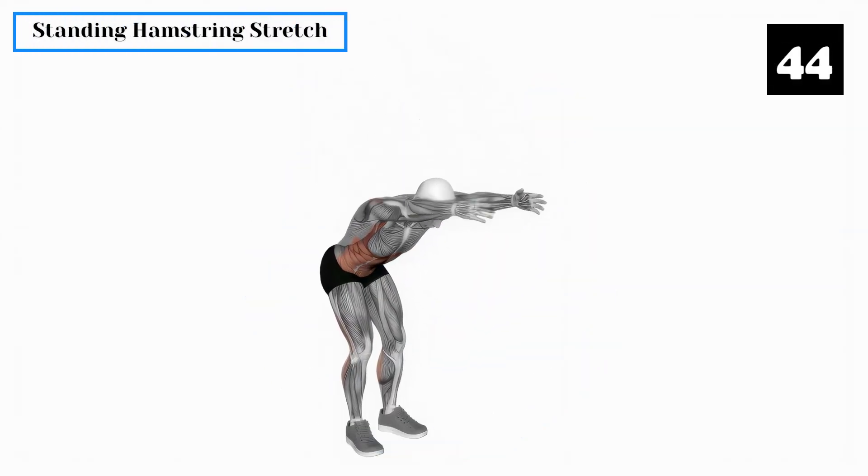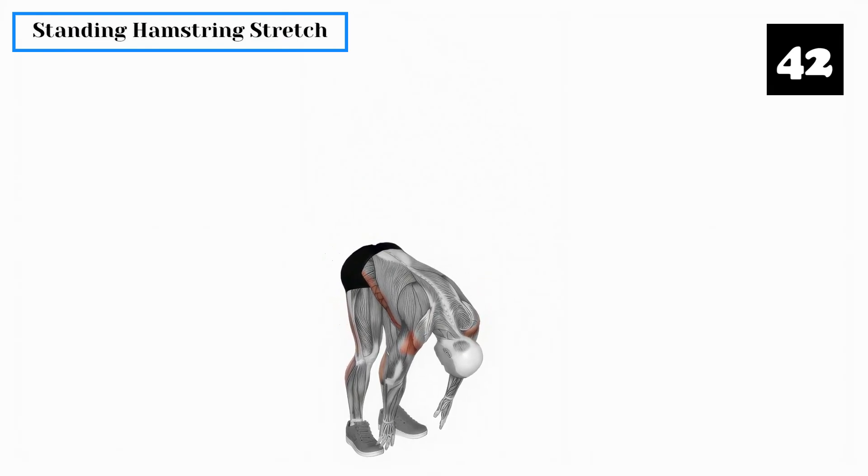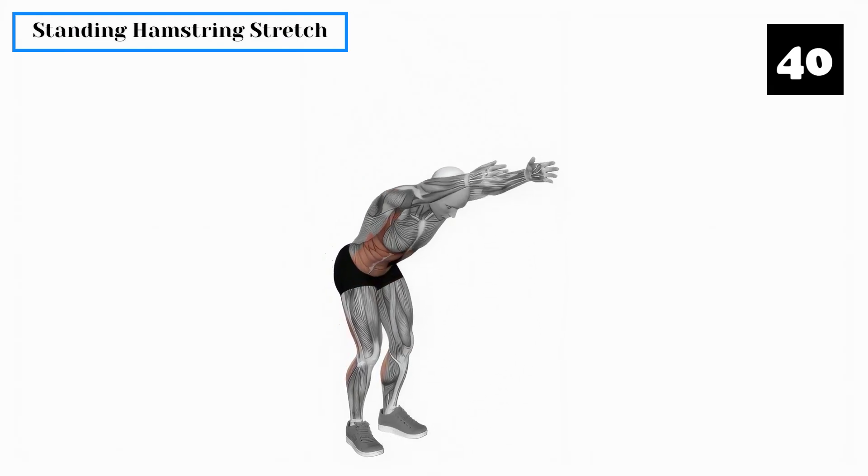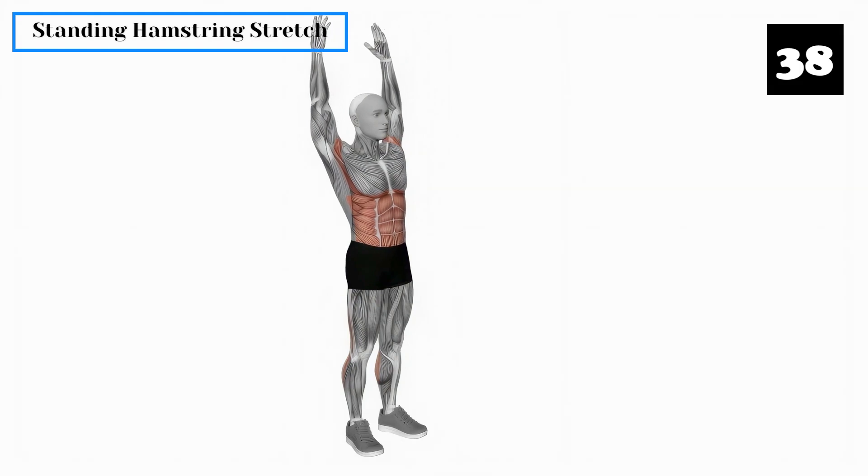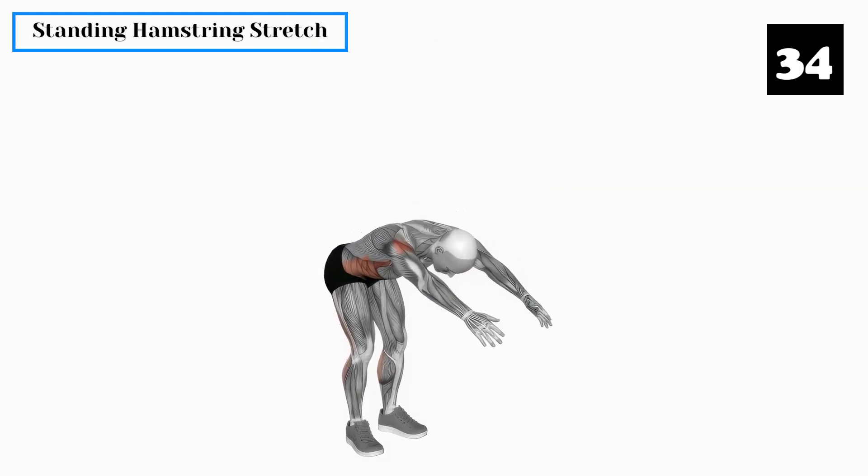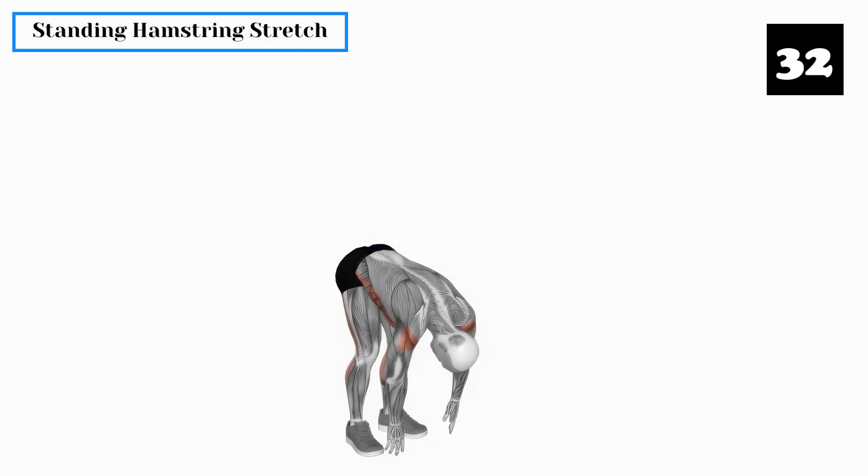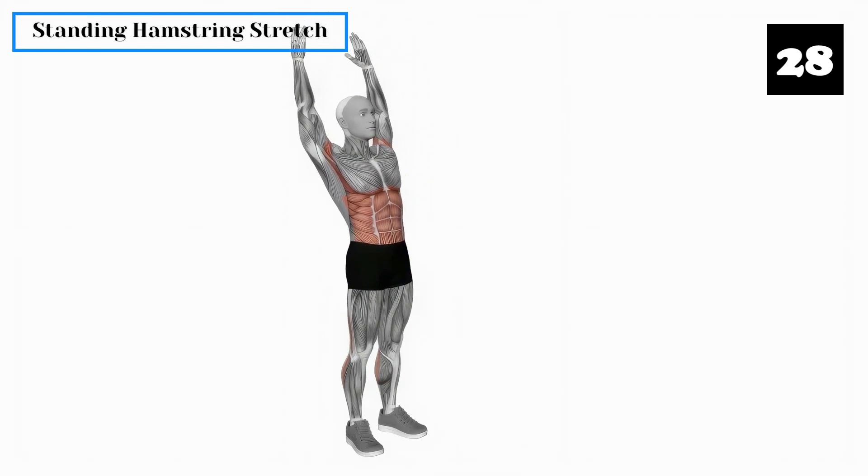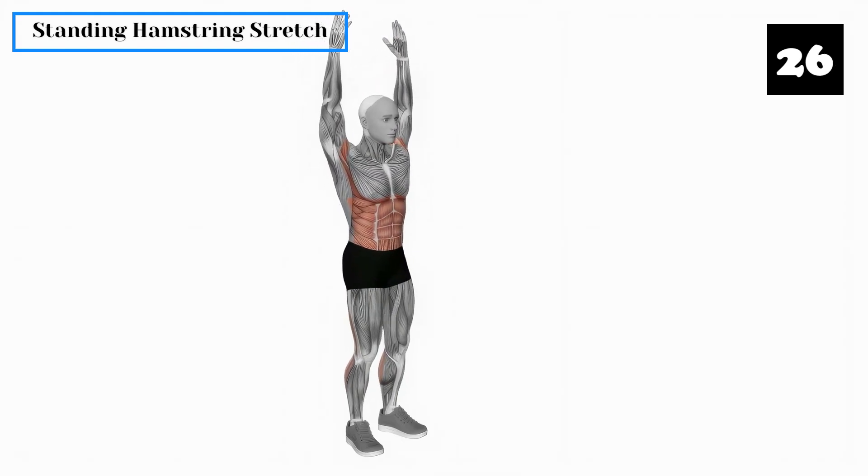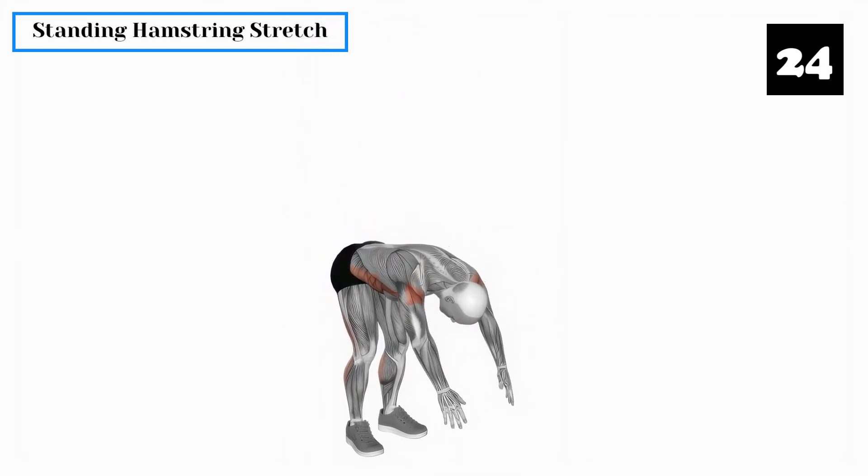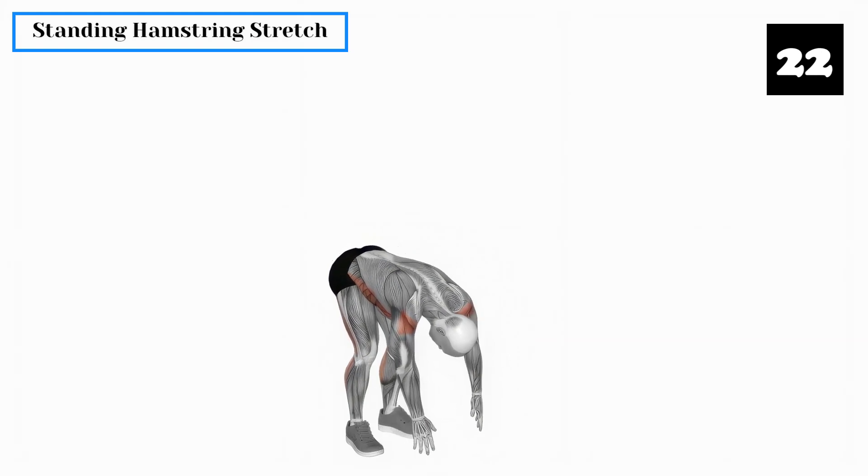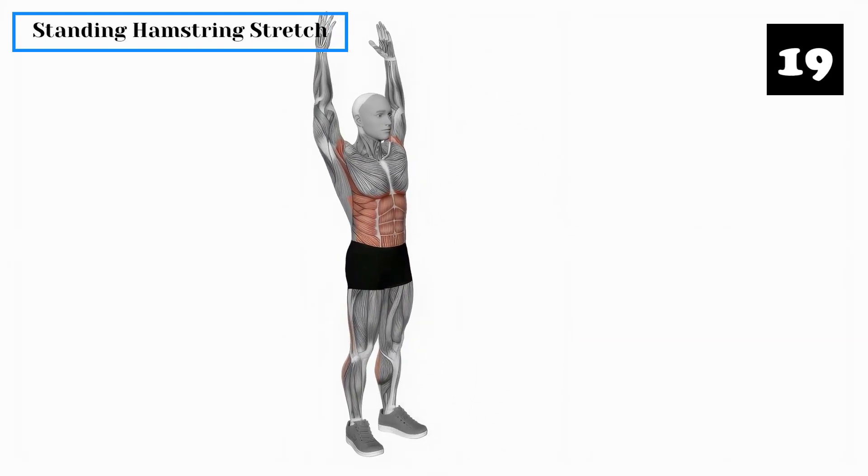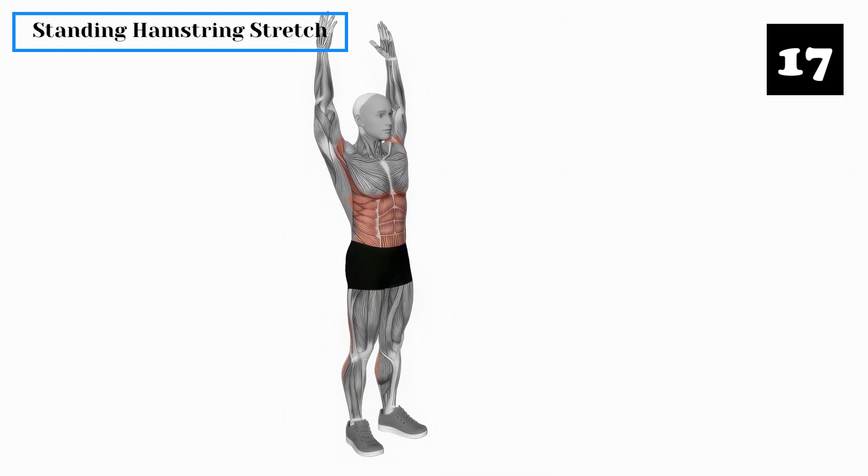Exercise 4: Standing Hamstring Stretch. The standing hamstring stretch is beneficial for stretching the pelvic floor and increasing blood circulation. Stand with your feet hip width apart and keep your knees slightly bent. Hinge forward from your hips, reaching towards your toes while keeping your back straight. Hold the stretch for 20 seconds, then slowly return to the starting position. Repeat this stretch a few times.